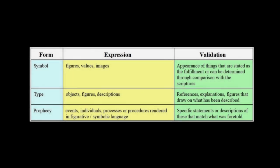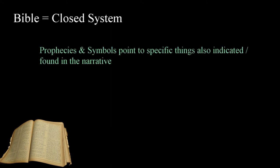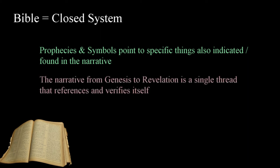In this series, I've focused on the uses of symbolic forms in the scriptures. These forms take on their meaning when combined with their counterparts in the narrative — this can be the fulfillment of a prophecy or, as we've discussed concerning types, the embodiment of specific characteristics mirroring that which is represented. The pairing of symbolic forms with their represented elements eliminates subjective interpretation and speculation as to their meaning. The Bible is a closed system — prophecies and symbols point to specific things also found in the narrative, and we need to see the entire Bible, from Genesis to Revelation, as a single thread that references and verifies itself.